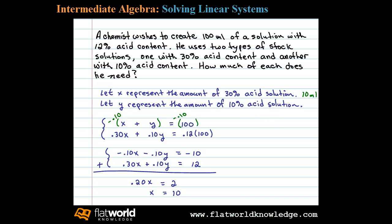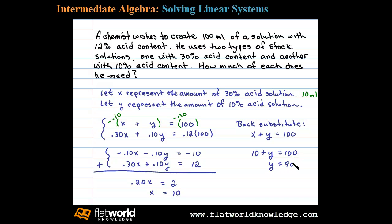All that's left is to back substitute to find the amount of the 10% acid solution. Using X + Y = 100 and substituting X = 10, we get 10 + Y = 100, so Y = 90, or 90 milliliters of the 10% acid solution.